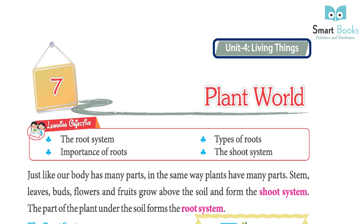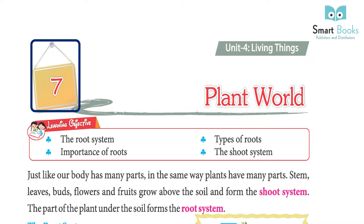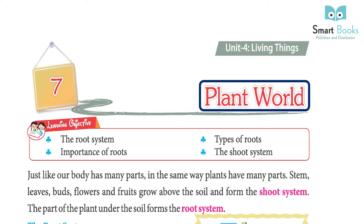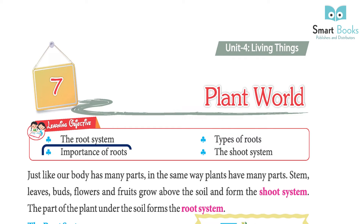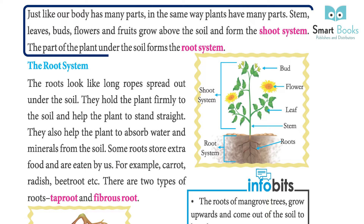Unit 4: Living Things, Chapter 7: Plant World. Learning objectives: the root system, types of roots, importance of roots, and the shoot system. Just like our body has many parts, plants also have many parts. Stem, leaves, buds, flowers, and fruits grow above the soil and form the shoot system.